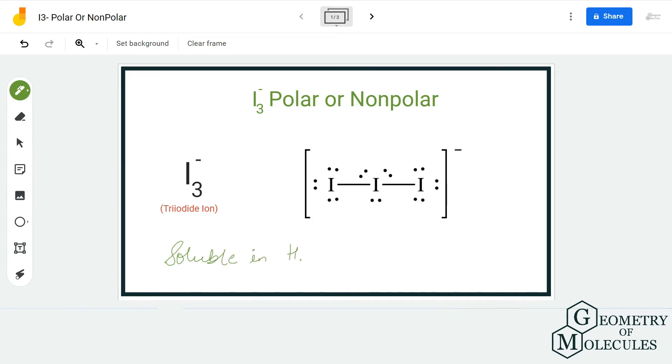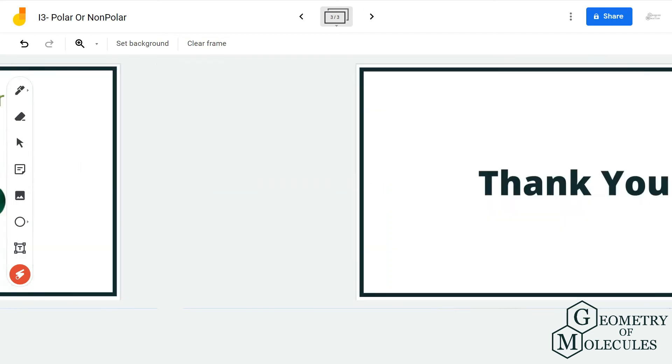I hope this helps you understand the polarity of I3 minus ion. Basically, there is no one-word answer for this. There is no polarity in this molecule, which means we cannot define if it is polar or non-polar. But you can keep in mind that it has properties like a polar molecule because it is soluble in water.